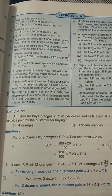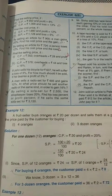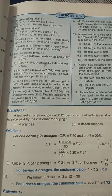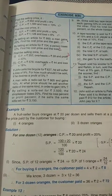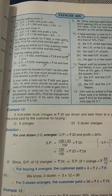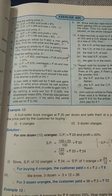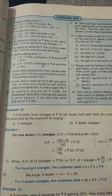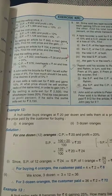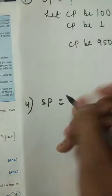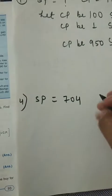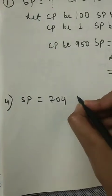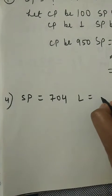Question number four says: by selling an article for rupees 107, a person loses 12%. Find his cost price and loss. In this question, selling price is given as 107 and loss percent is given as 12%.